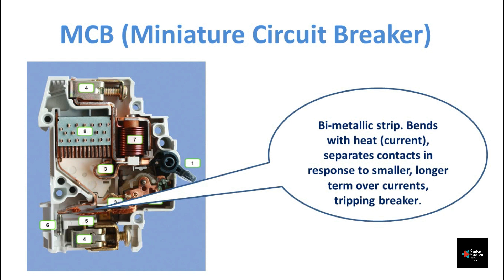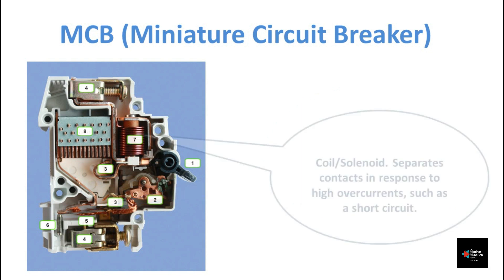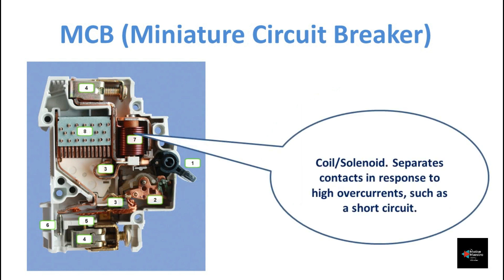The solenoid coil: when a very high current is passed through the MCB, the magnetic tripping coil will be magnetized and it will trigger the actuator latch mechanism. This trigger will cause the contacts to separate.